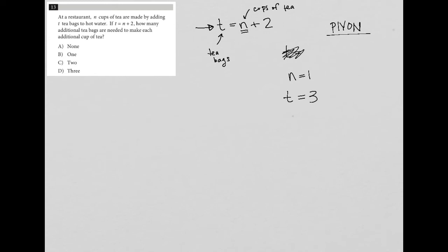So the question says, how many additional tea bags are needed to make each additional cup of tea? An additional cup of tea under my scenario would be n equals 2. If n equals 2, T would equal 4, which would mean I just have one additional. I'm just adding one extra tea bag, which would tell me that choice B is the correct answer.